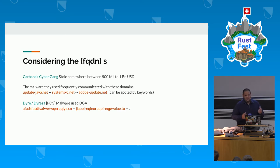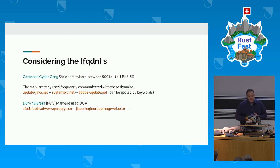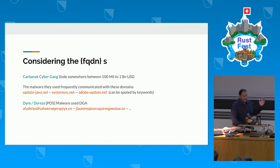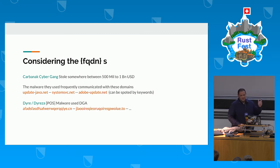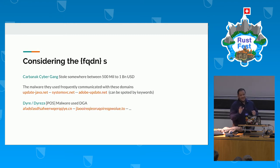If you look at these logs and only look at the FQDN, and you have a way to separate certain FQDNs based on some rules, you could find very interesting stuff in the logs. For instance, if you weed out or separate FQDNs that contain certain keywords, you could catch and detect very advanced malware — stuff used by the CarbonX cyber gang, who allegedly stole around 500 million to one billion dollars. Their APT malware was simply communicating with domains containing keywords like 'update-java', 'adobe-update', and 'systems'. If you detect these keywords and have an analyst look at it, you could stop really big damage from targeted attacks.